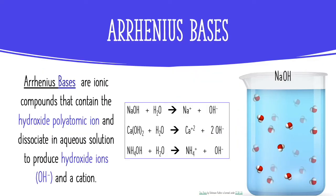An Arrhenius base is an ionic compound that contains the hydroxide polyatomic ion and dissociates in aqueous solution to produce hydroxide ions and a cation. If we take a look at the beaker, I have a unit of sodium hydroxide — putting that in water, it dissociates into its respective ions: a positively charged sodium ion and the hydroxide ion that makes that compound a base. Remember, Arrhenius bases produce hydroxide ions in solution when they dissociate.